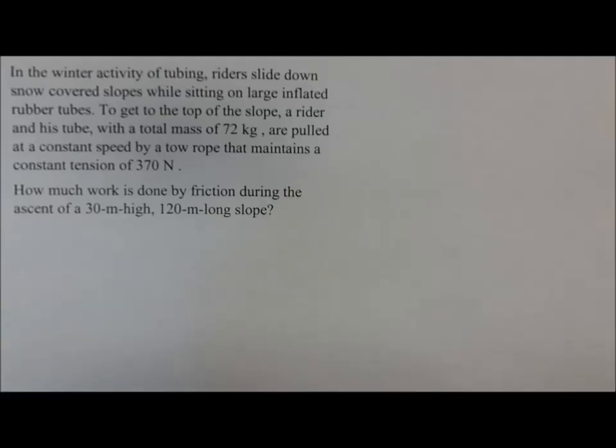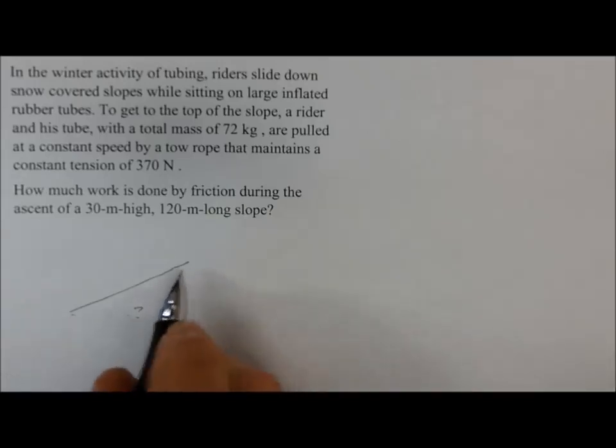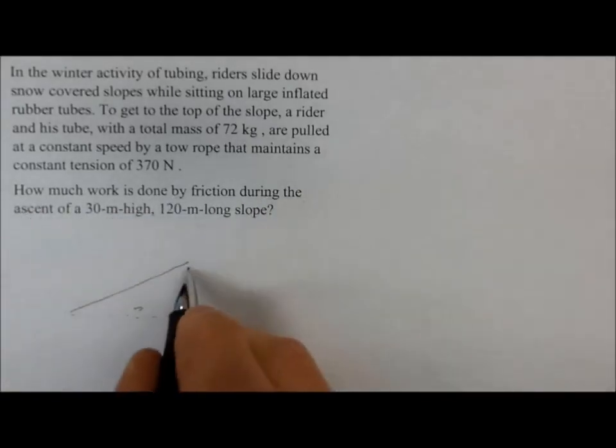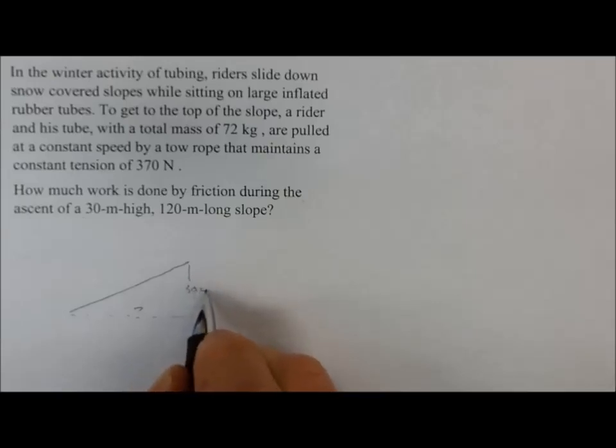So we've got tubing, riders slide down the snow covered slopes. They're at the top, right on this tube, they're pulled at a constant speed by a tow rope. We've got an angle uphill like this. Based on how much work is done by the friction during the ascent of a 30 meter high, this is 30 meters, and this is 120 meters long.